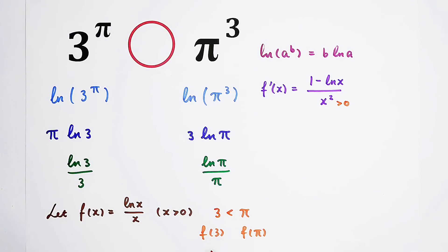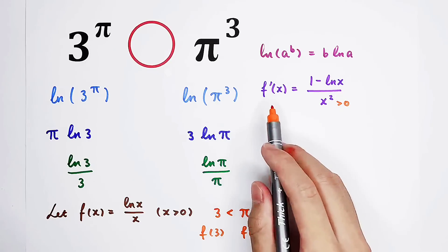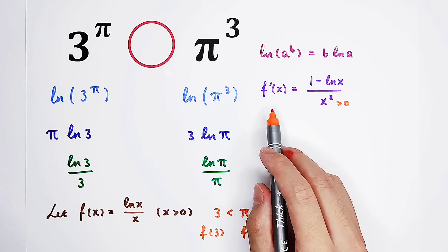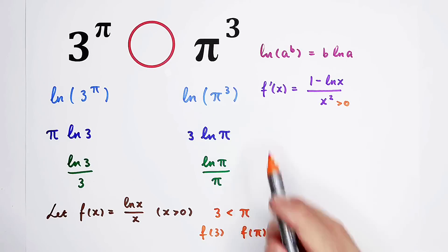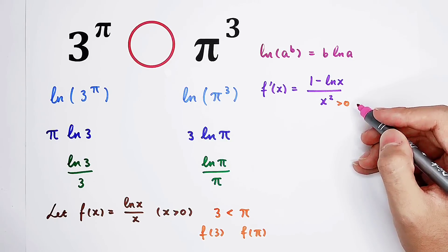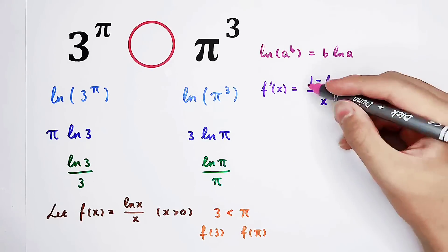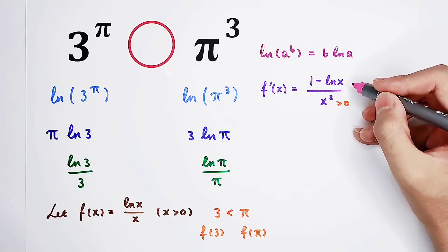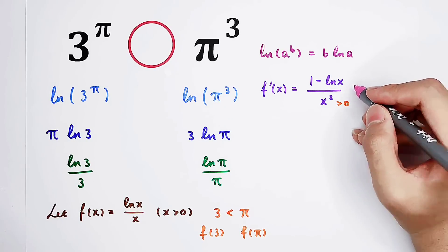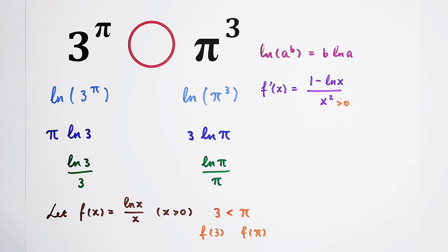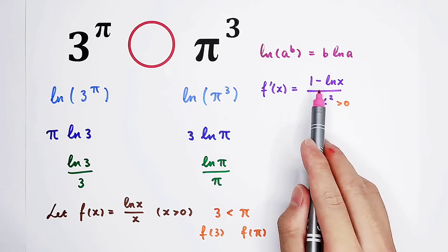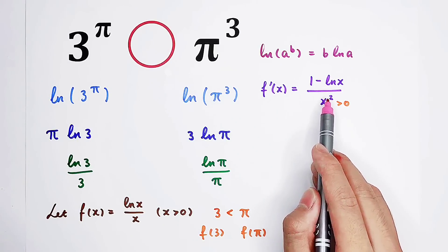Now to compare f(3) with f(pi), we need to know if this function is decreasing, increasing, or constant — that is, whether the derivative is positive, negative, or zero. Since the denominator x squared is always greater than zero, we only need to look at the numerator: 1 minus the natural log of x. Of course, it can be positive, negative, or zero.